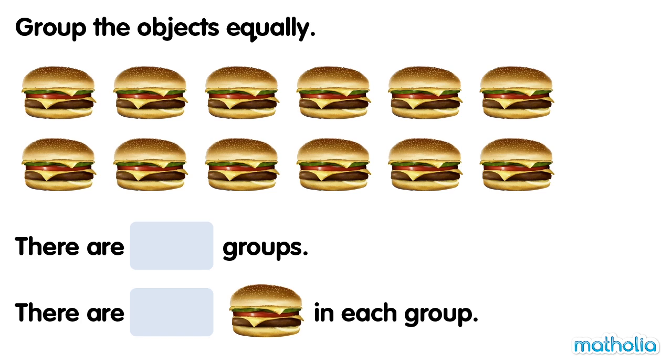Group the objects equally. There are 12 burgers. Let's make groups of 6 burgers.